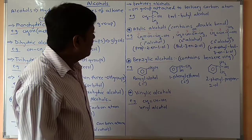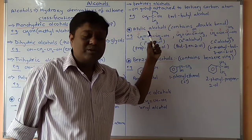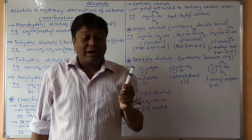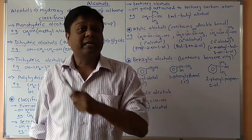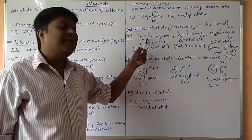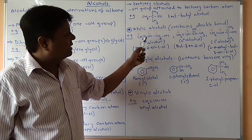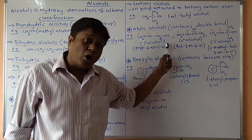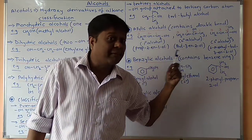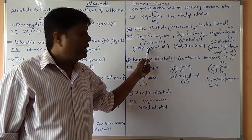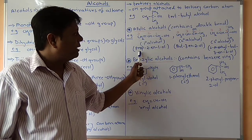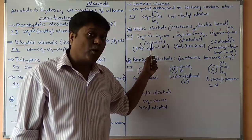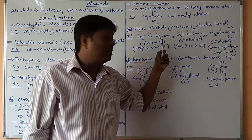The second type is allylic alcohols. Allylic means there is a presence of a double bond, which is why they are called allylic alcohols. They can also be primary, secondary, or tertiary depending on the OH group. For example, CH2=CH-CH2OH has a hydroxy group attached to a primary carbon atom. This is prop-2-en-1-ol: three carbons (prop), double bond after the second carbon (2-en), and the hydroxy group on carbon one (1-ol).